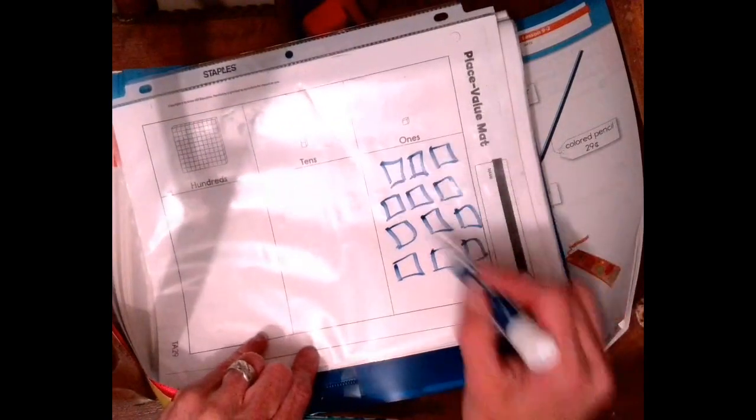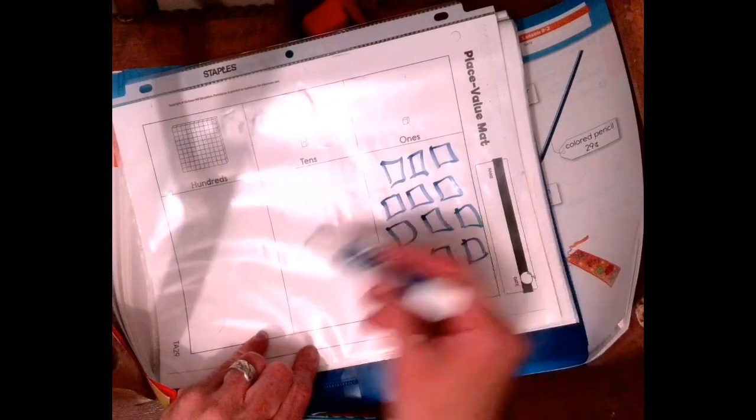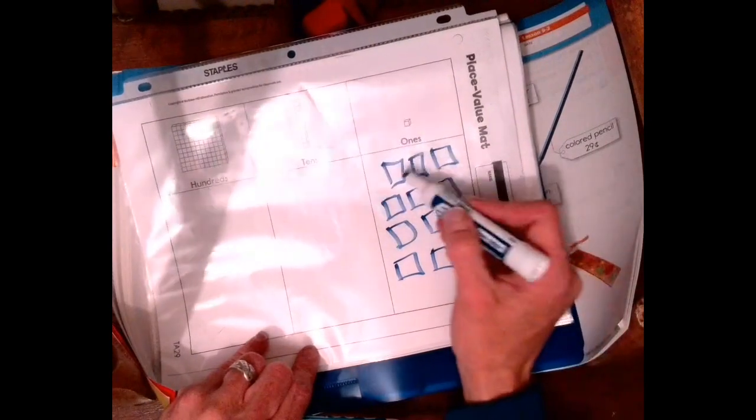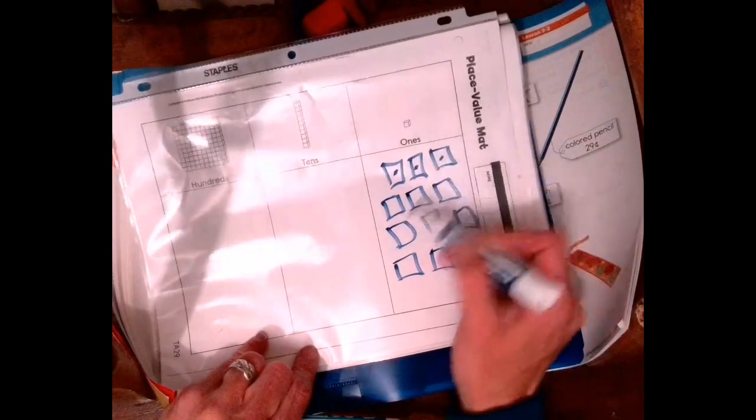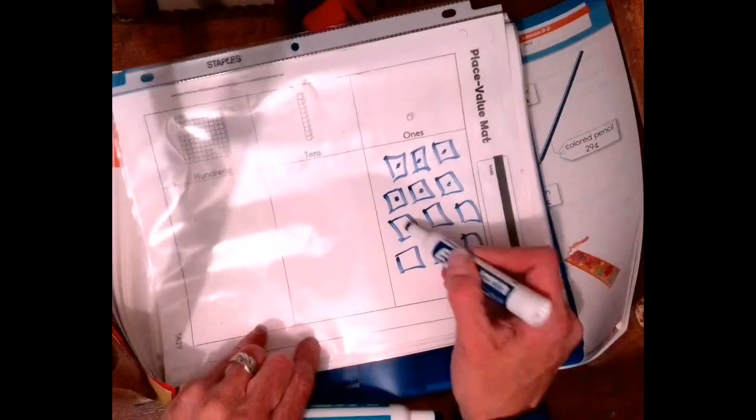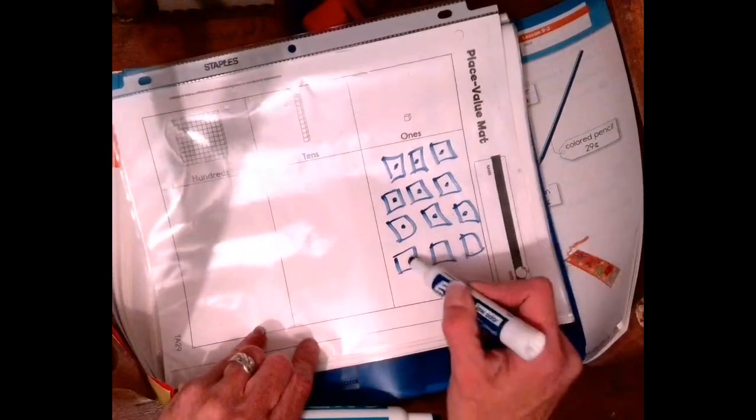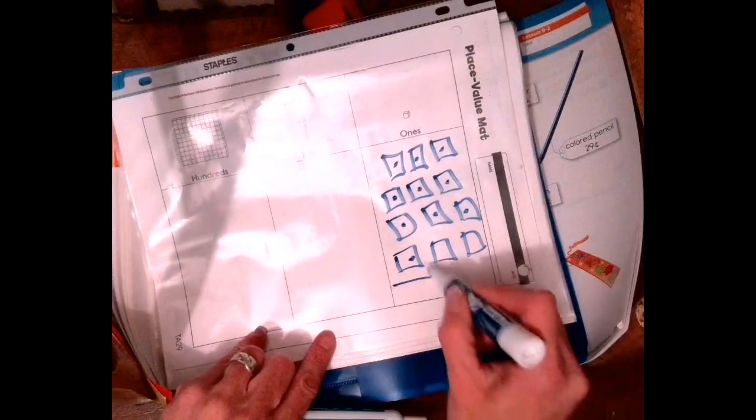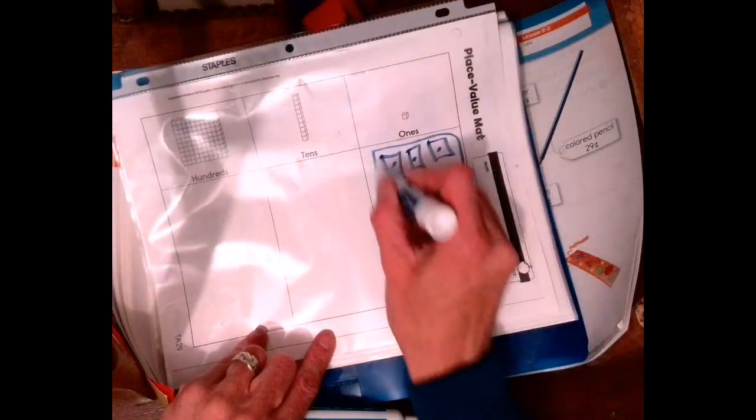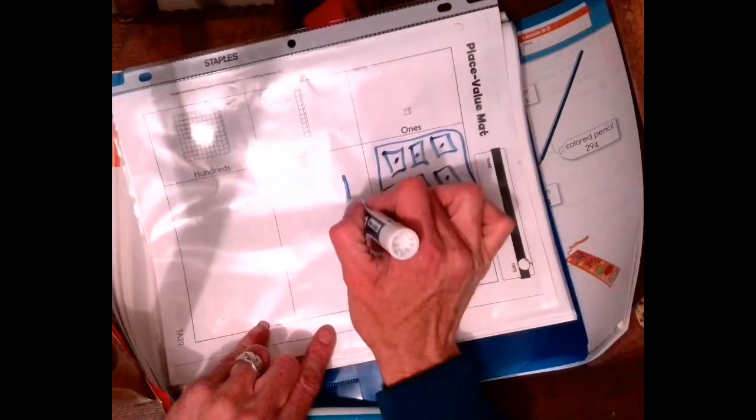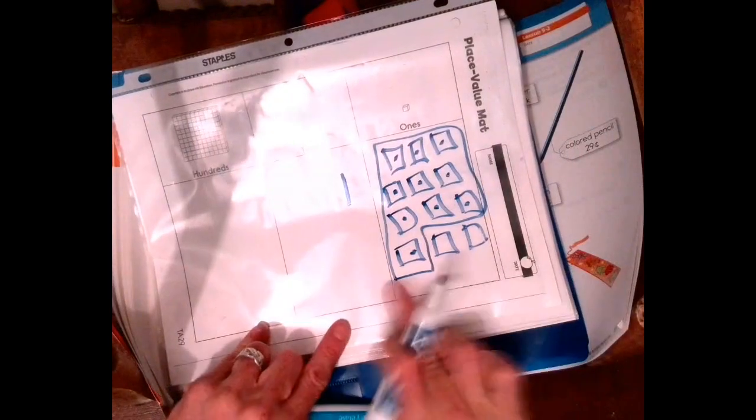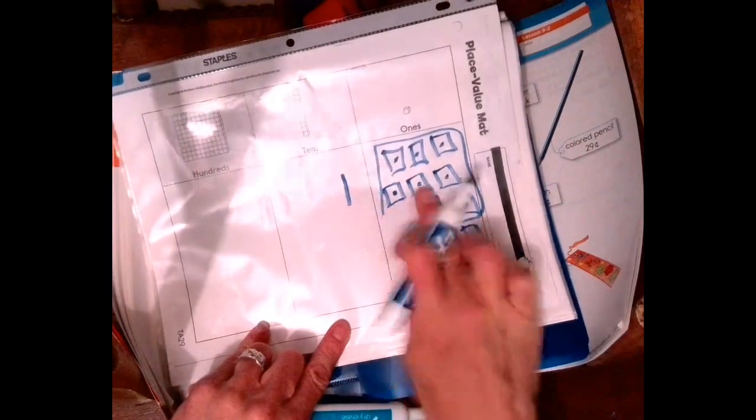What we're going to do is add them up, and if we have more than ten, we're going to put that group of ten over here. So one, two, three, four, five, six, seven, eight, nine, ten. All of these are going to go into a group of ten. We're going to put them over there. So I'm going to erase these because we put them in the tens.